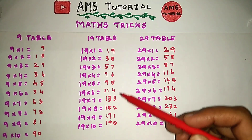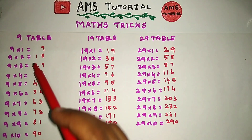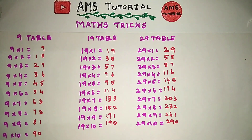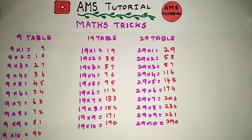If you use the 0, then you use the 9 table. If you use the 9 table, then you use the 9 table. So, 9 table, 19 table, 29 table — it'll be easy for the Pato.